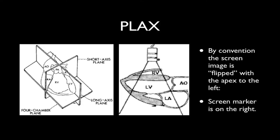By convention in echocardiography practice, the screen image is displayed so that the probe marker and screen marker are shown on the right of screen. This means the probe marker is pointing towards the right shoulder, and the aorta and great vessels are towards that side — so the aorta and aortic valve will appear on the right of screen. Conversely, the non-probe marker side, which faces the left ventricular apex, will display on the left side of the screen.